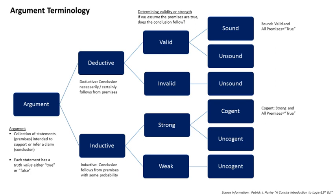Deductive arguments can be valid or sound. In a valid argument, premises necessitate the conclusion, even if one or more of the premises is false and the conclusion is false. In a sound argument, true premises necessitate a true conclusion. Inductive arguments, by contrast, can have different degrees of logical strength. The stronger or more cogent the argument, the greater the probability that the conclusion is true; the weaker the argument, the lesser that probability.